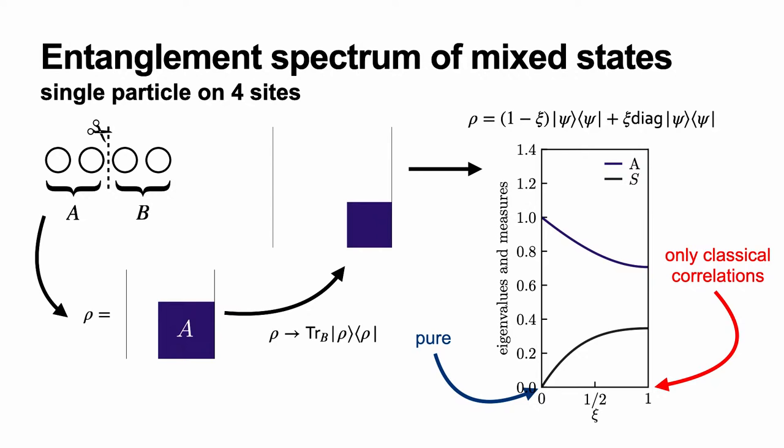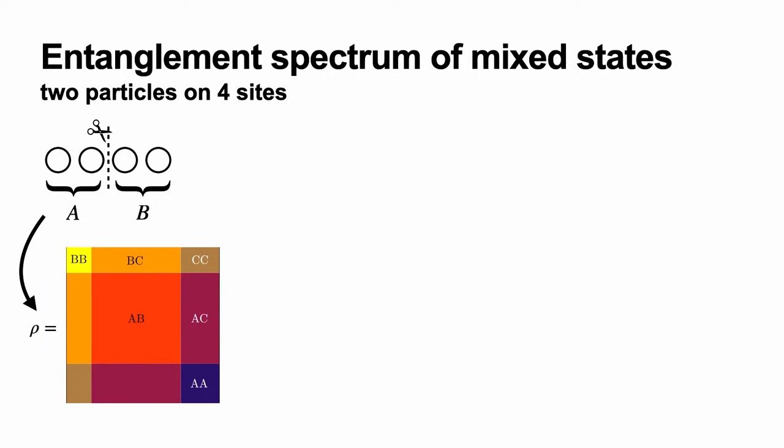That was single particle physics — we can also go to two particles. Restricting to two particles, the density matrix again restricts to the two-particle Fock block, with many more possible configurations, which we can still label by the configurations of the two particles with respect to the bipartition. Both particles can either live in subsystem A, subsystem B, or be coherently distributed across the bipartition. The higher-order operator with the partial trace again arranges the blocks on the diagonal and compresses them, allowing us to label and decide which spectral values to include in our measure.